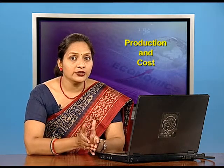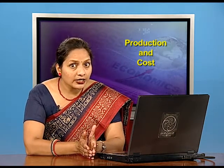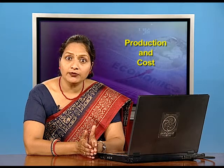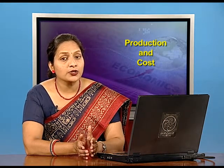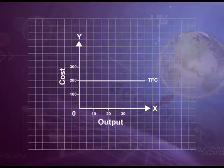Fixed costs include such charges as rent, insurance, depreciation on the basis of time, property taxes, interest on capital employed, watchman's wages, etc. Graphically, total fixed cost will be represented as a straight line parallel to the horizontal axis. The curve shows that the total fixed cost remains constant at different levels of output.